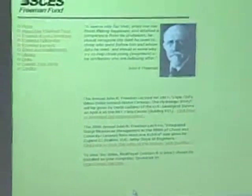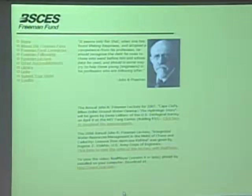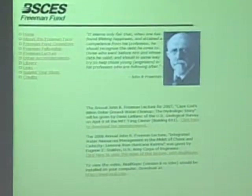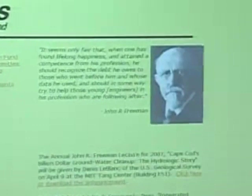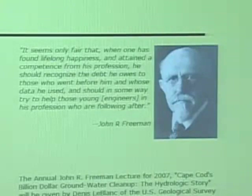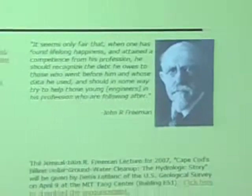As most of you know, John R. Freeman was a graduate of MIT. He was a famous engineer who worked around the tail end of the previous century, and he did a number of projects, including locally the design of the original Charles River Dam. Before he died, he left some money to the group with the purpose of applying that to the education of young hydraulic engineers, loosely interpreted. This annual Freeman Lecture is one way that money is used.